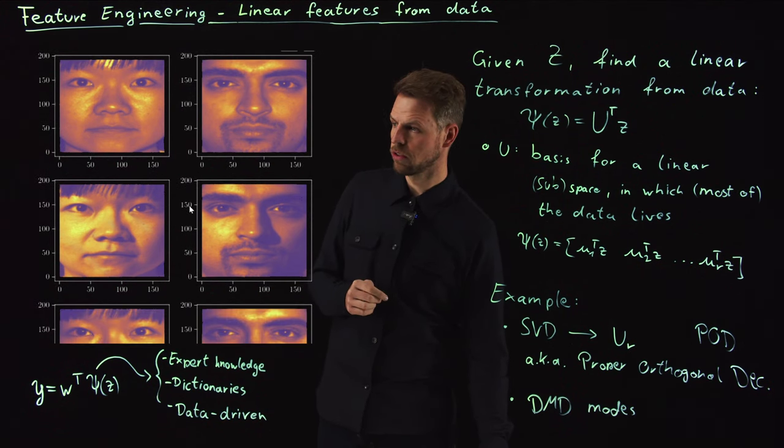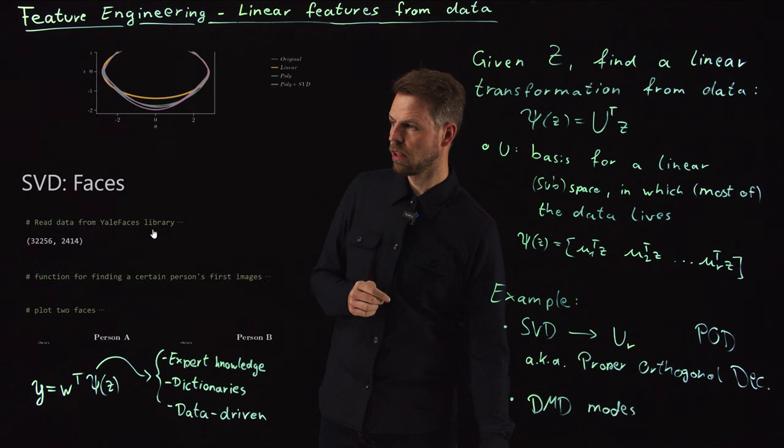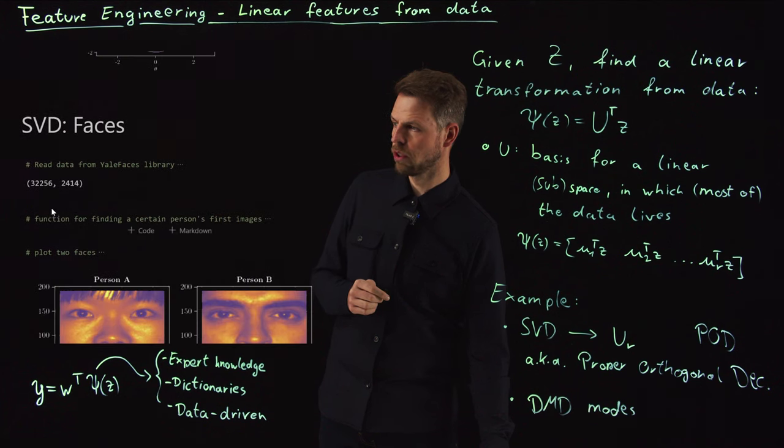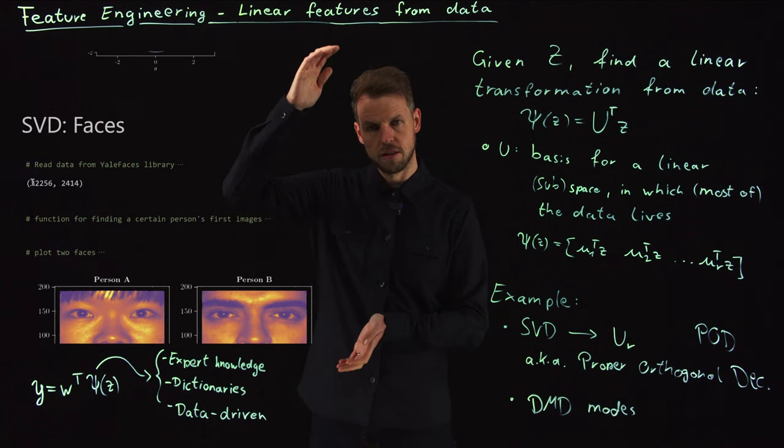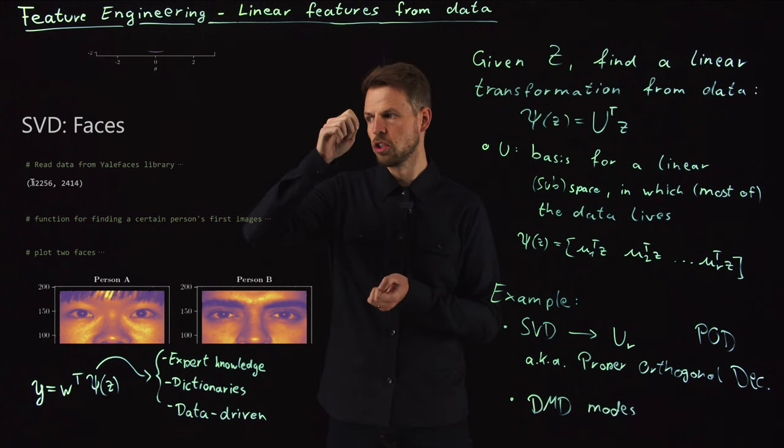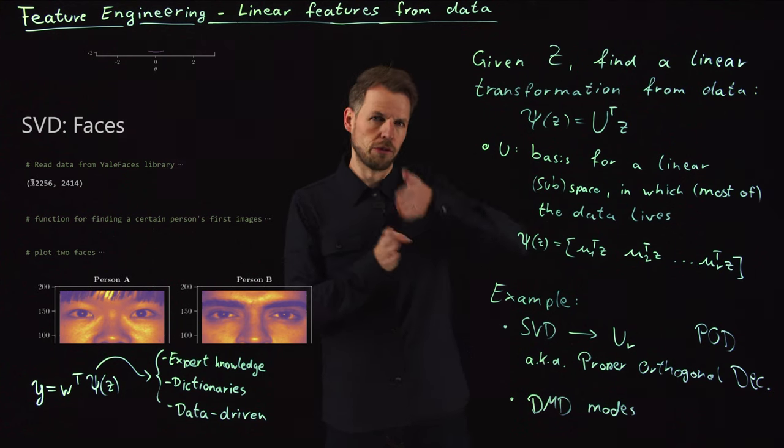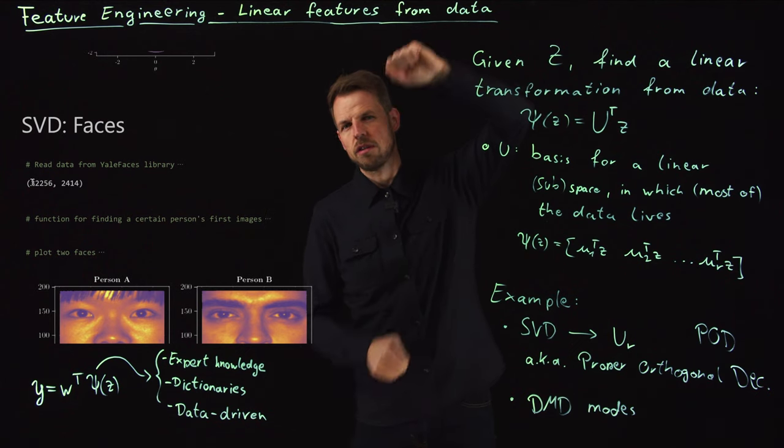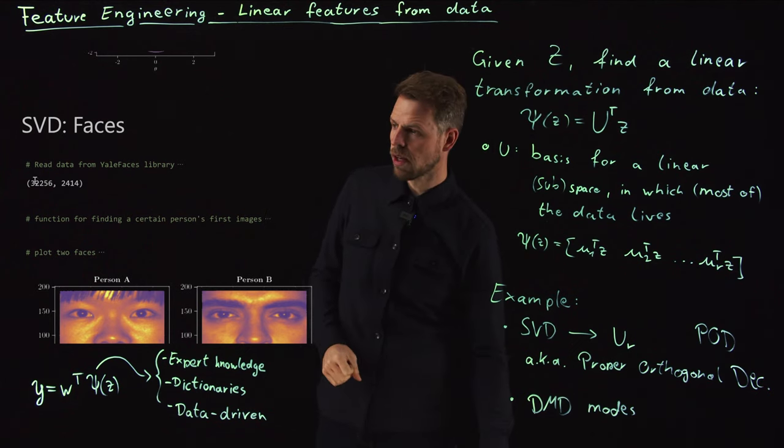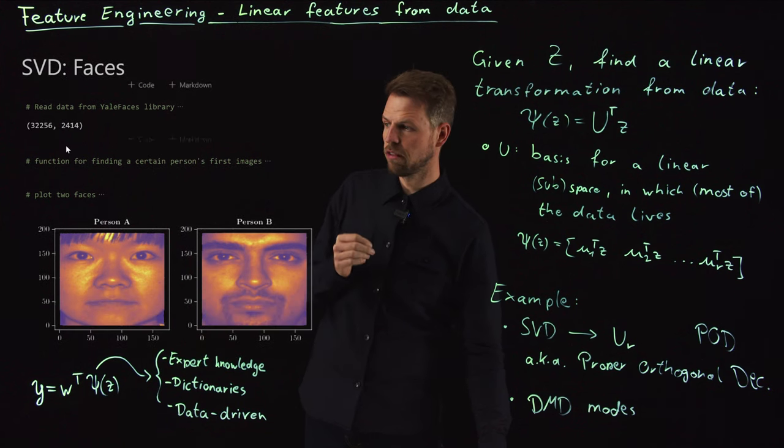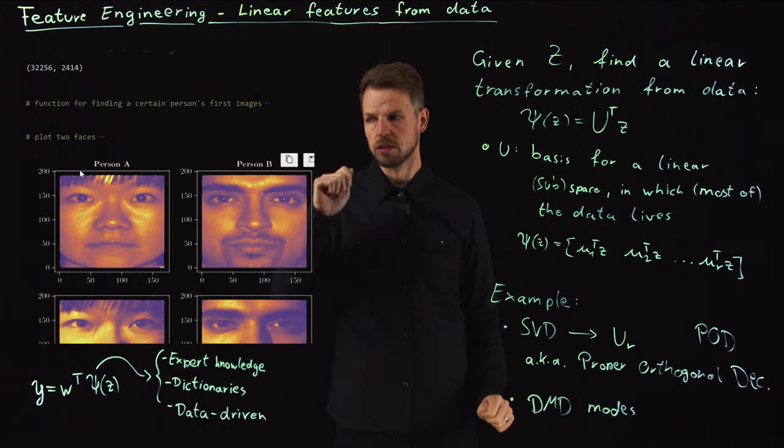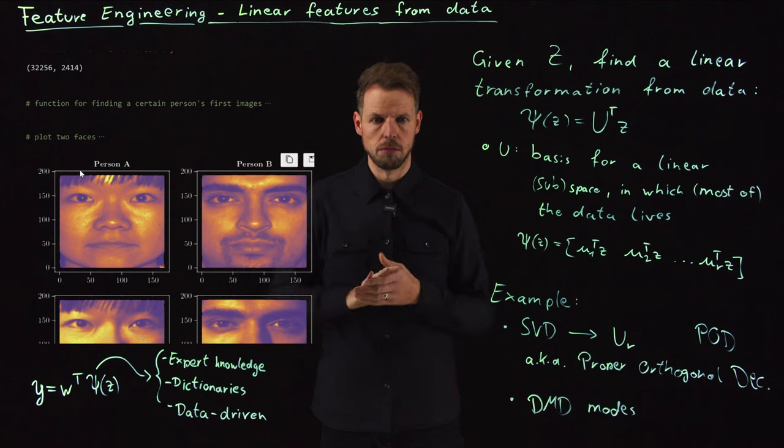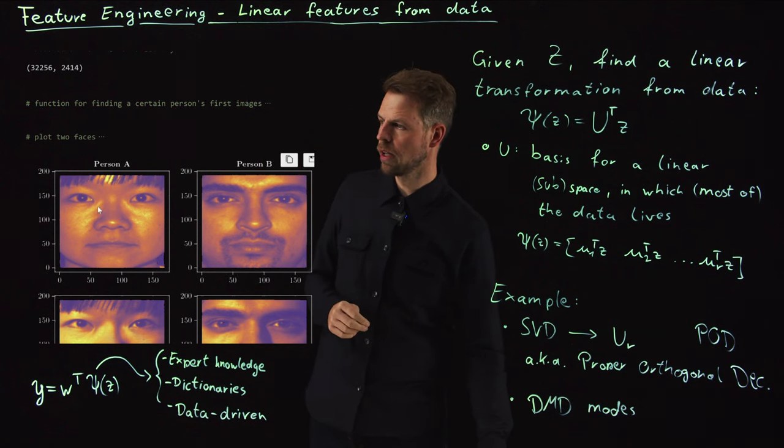It's a library of 40 to 50 people, I'm actually not certain, and then multiple shots of each person to give you more information under different lighting conditions. I've randomly picked two people out of this library and you see same face, different lighting conditions. So this is now our large data matrix. It's 32,000-dimensional—this is the pixel information—and then I have 2,400 columns for the 2,400 photos that I flattened into very long vectors.